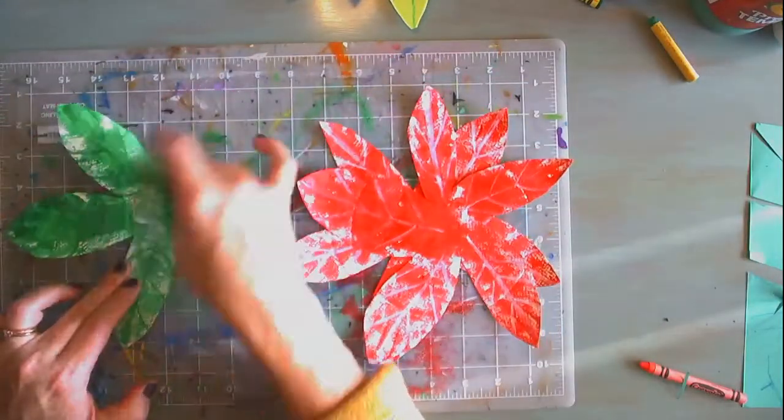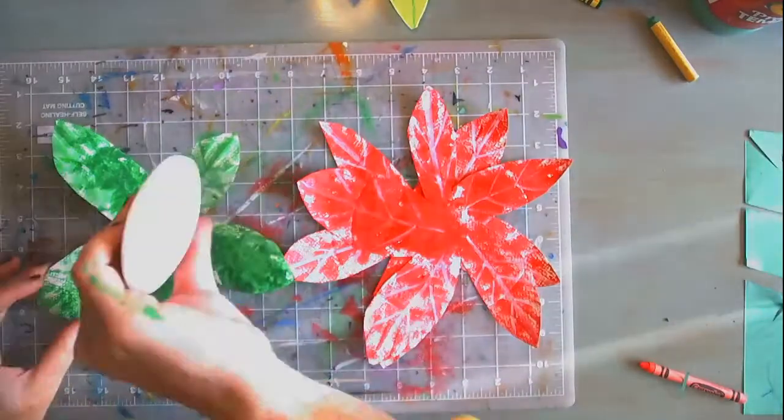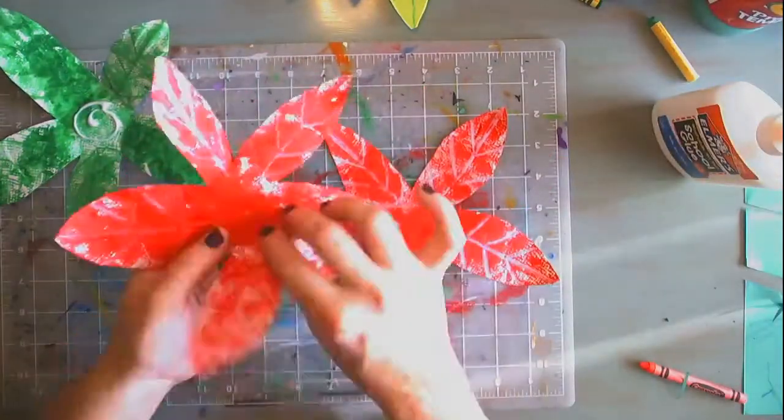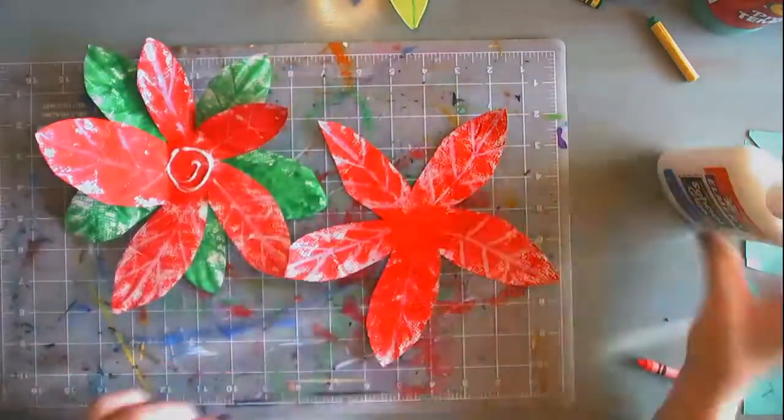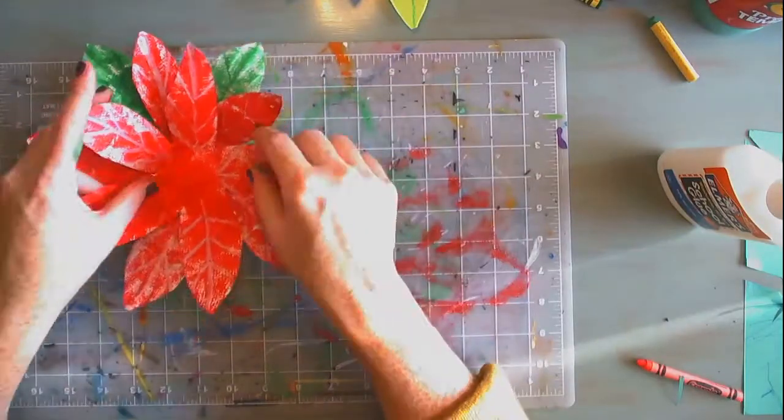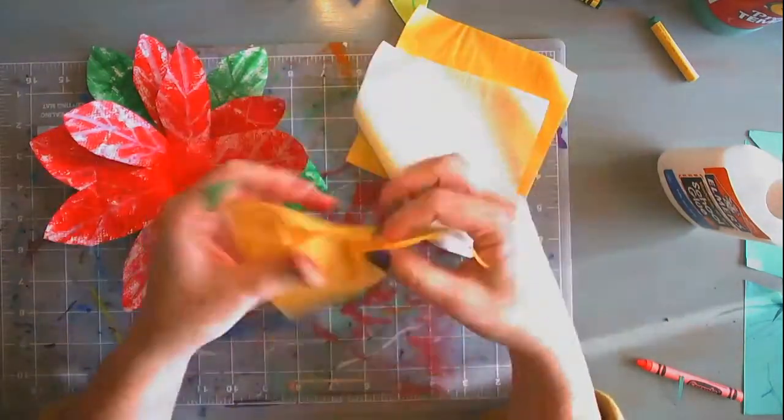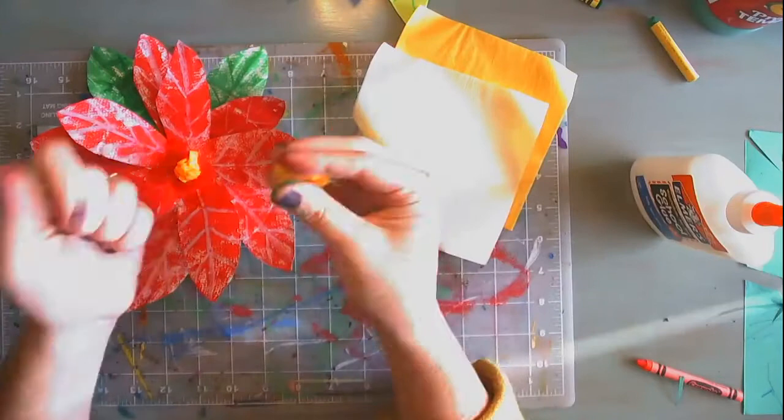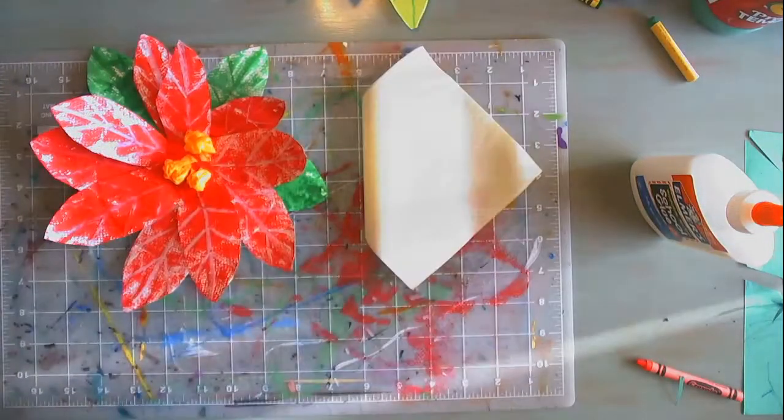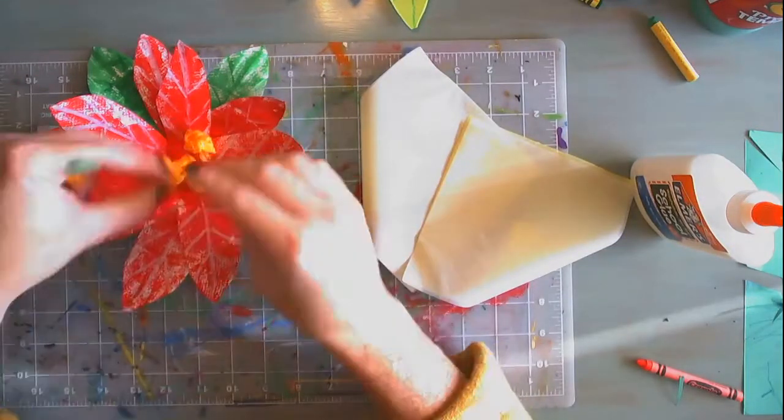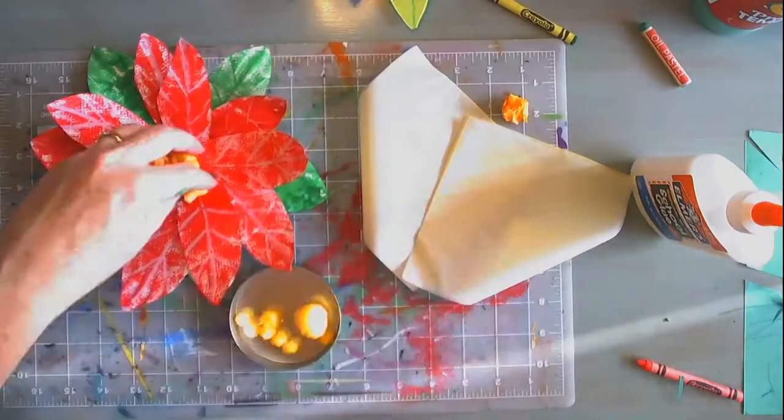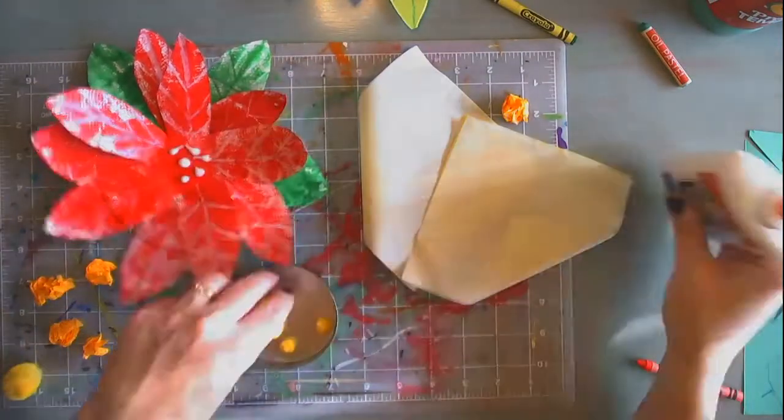Now it's time to fold and glue. You can ball up tissue paper and you can make the center of the flower that way with just little balls of tissue paper or you can use pom-poms.